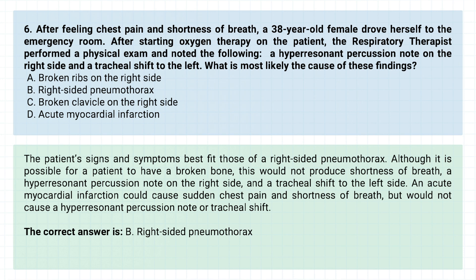The patient's signs and symptoms best fit those of a right-sided pneumothorax. Although it is possible for a patient to have a broken bone, this would not produce shortness of breath, a hyper-resonant percussion note on the right side, and a tracheal shift to the left side. An acute myocardial infarction could cause sudden chest pain and shortness of breath, but would not cause a hyper-resonant percussion note or tracheal shift.